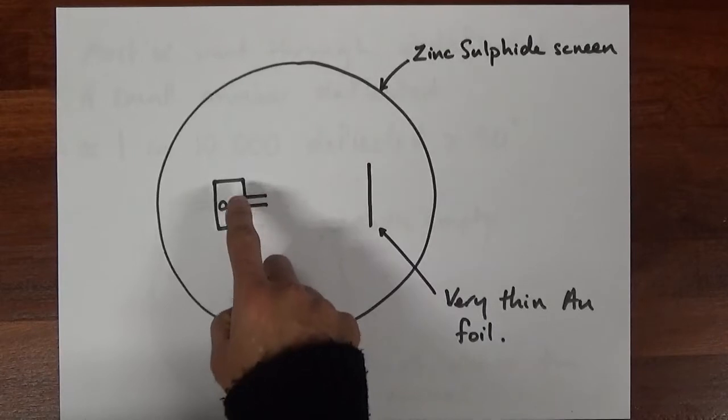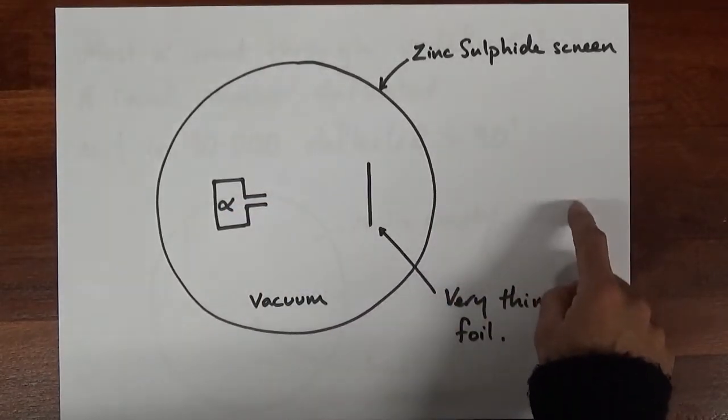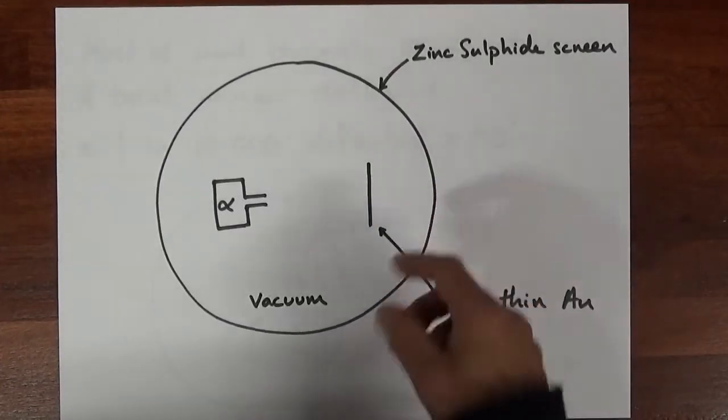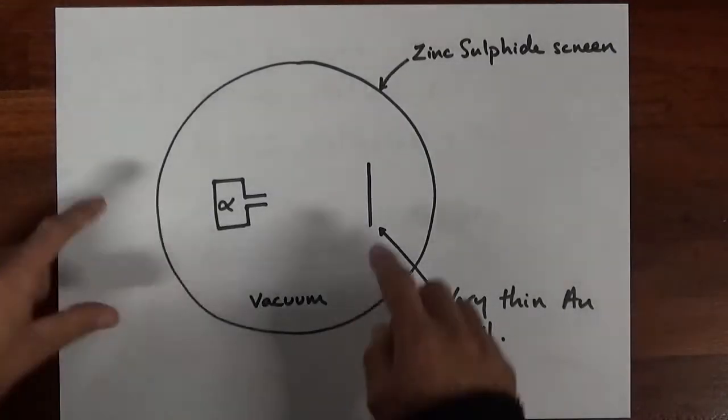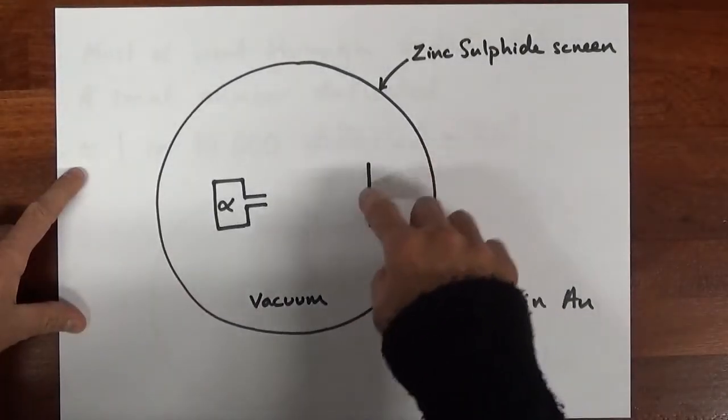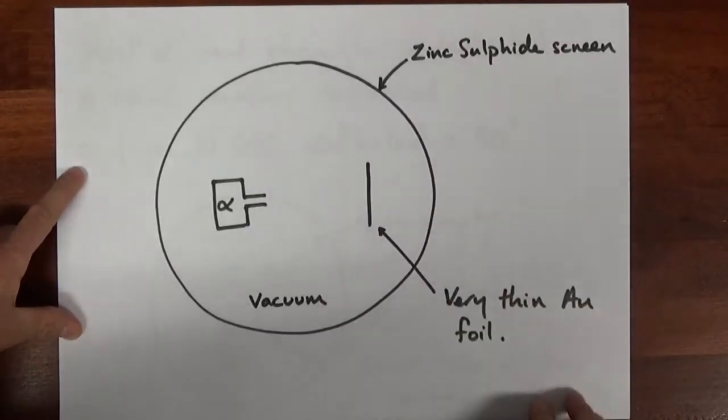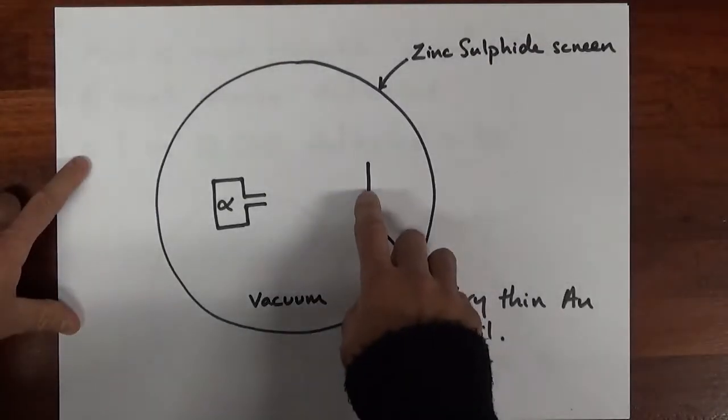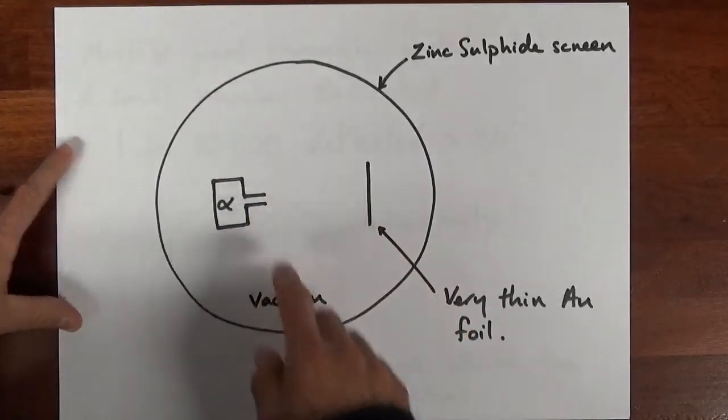These are random events - random production of alpha particles, random flash appears here, another flash appears here. Really whoever's sitting here drew the short straw because they're just going tick tick tick tick because they're all arriving here, or most of them arriving there. A very small percentage though were deflected and would arrive over here or over here or up there, and even a smaller percentage, about one in every 10,000, was found to be deflected back on itself at an angle greater than 90 degrees.